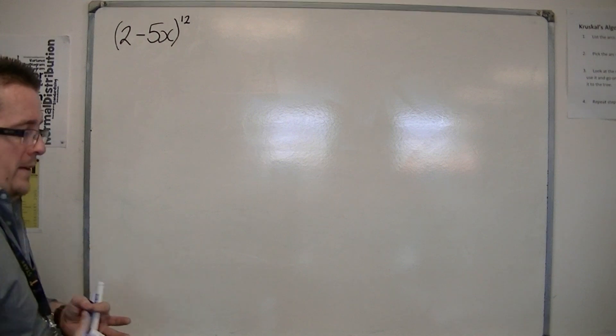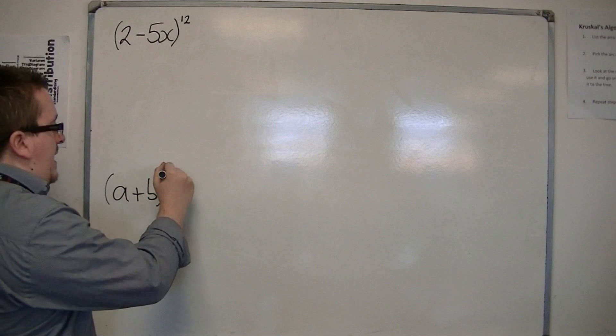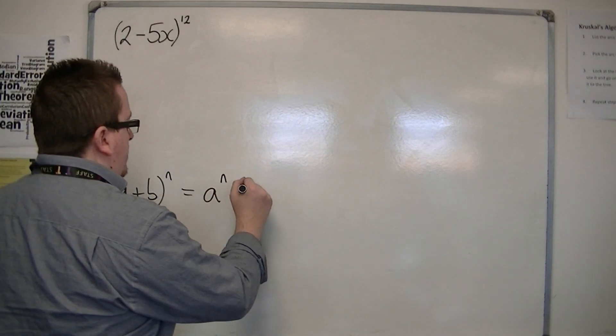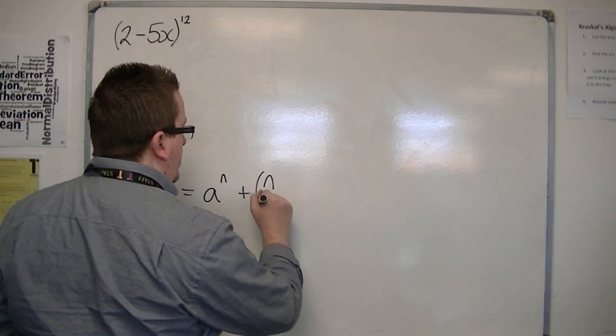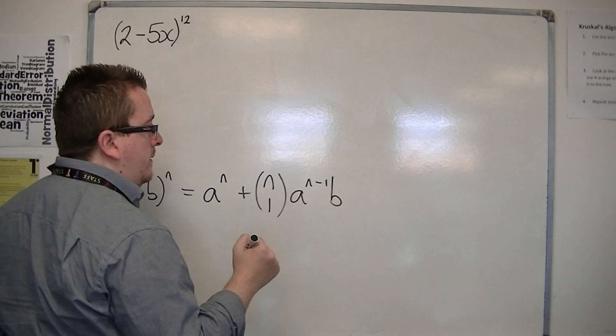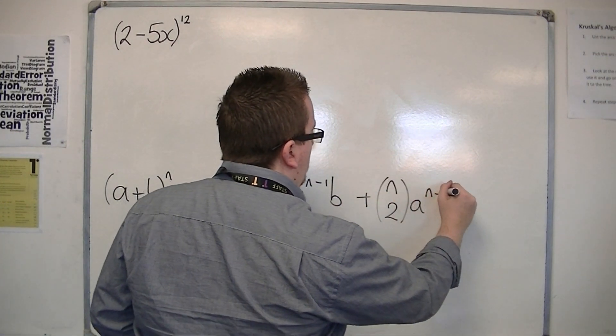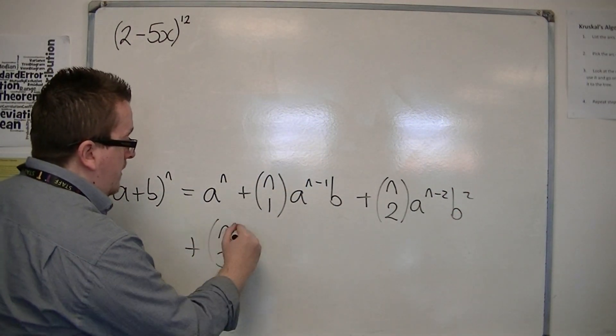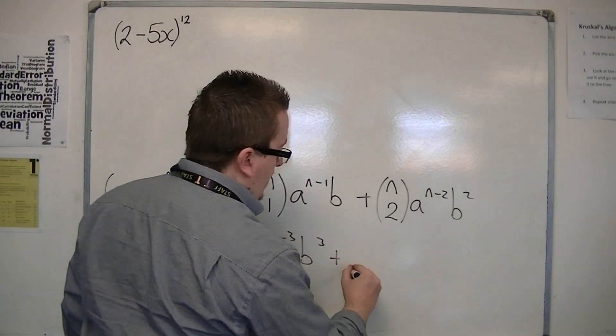So, what we've found is that if we are expanding something like $(a+b)^n$, then we have $a^n$ plus $\binom{n}{1}a^{n-1}b$ plus $\binom{n}{2}a^{n-2}b^2$ plus $\binom{n}{3}a^{n-3}b^3$ plus... and so on.